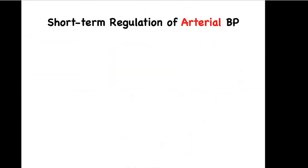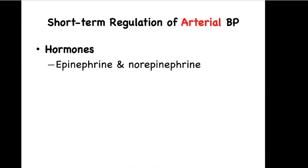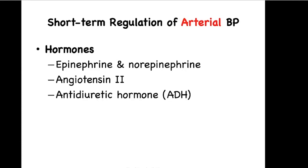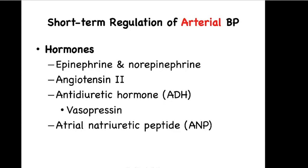Let's look at short-term regulation of arterial blood pressure involving hormones. The adrenal medulla releases epinephrine and norepinephrine in response to sympathetic input. These hormones bring about the same actions as the neurotransmitter norepinephrine: vasoconstriction, and increased heart rate and contractility. Angiotensin II is a vasoconstrictor. Antidiuretic hormone is also a vasoconstrictor — for that reason it is known as vasopressin. All of these hormones are vasoconstrictors, which will increase blood pressure. The last hormone, atrial natriuretic peptide, does the opposite and brings about vasodilation.